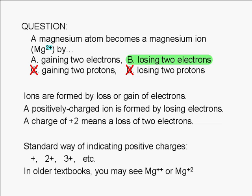With older textbooks, however, you may see a +2 charge indicated with two pluses (Mg²⁺⁺) or with the plus sign in front of the number (Mg⁺²).